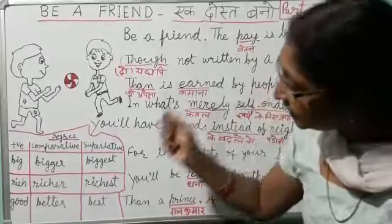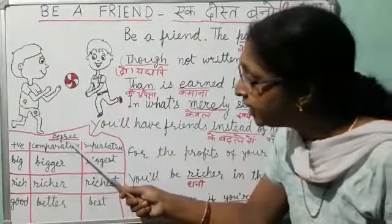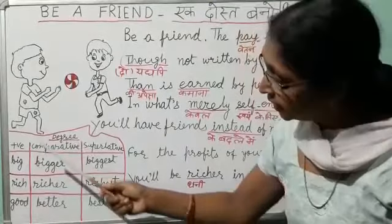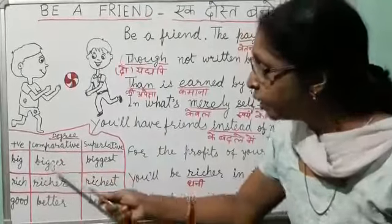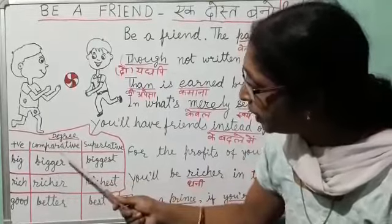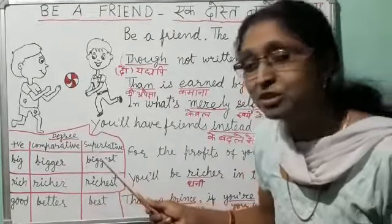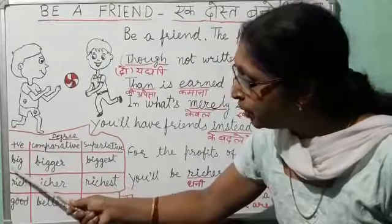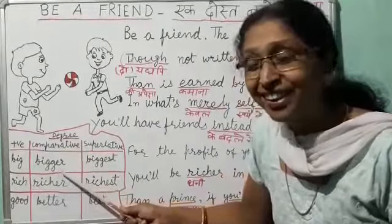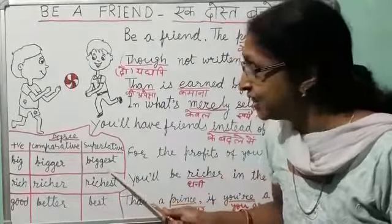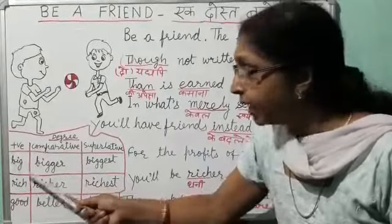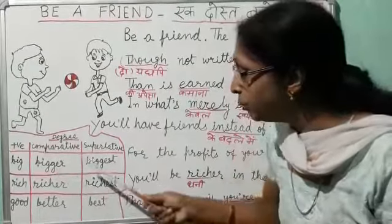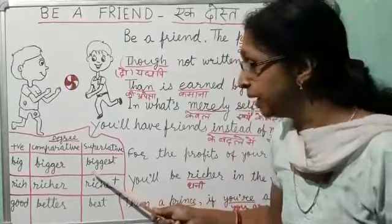Thoda sa grammar ke ghar mein — Degree of comparison of adjectives. Degrees teen hai: Positive degree, comparative degree, and superlative degree. Big, bigger, biggest. Big means bada, bigger means kisiki apeksha bada, aur biggest means sabse bada.